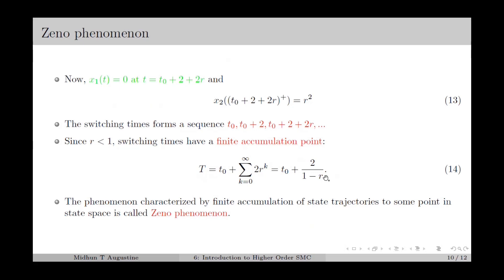Since r is strictly less than 1, this is a finite accumulation time. The phenomenon characterized by finite accumulation of state trajectories to some point in the state space is called Zeno phenomenon. In the bouncing ball case, the state trajectory converges to the origin in a finite time, so the bouncing ball exhibits Zeno phenomenon.